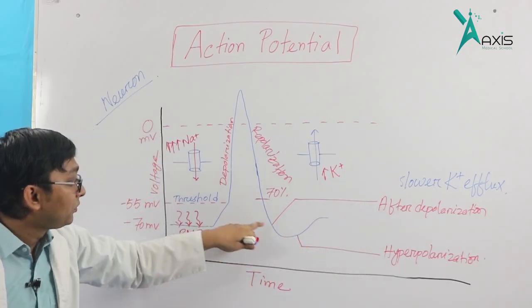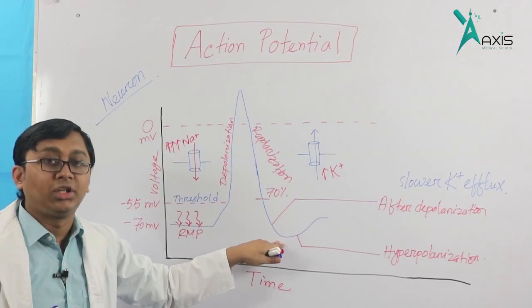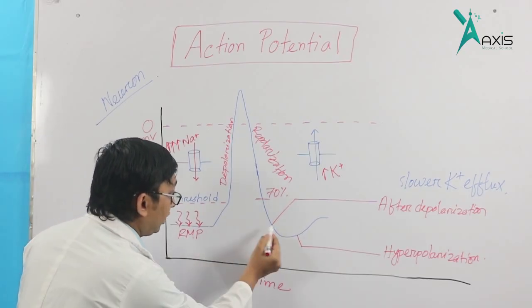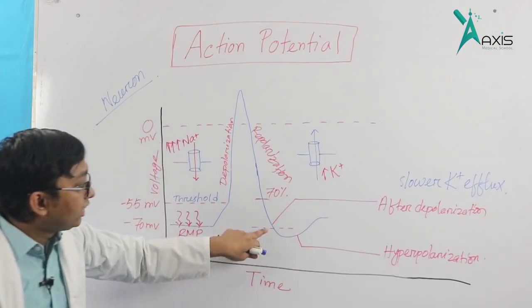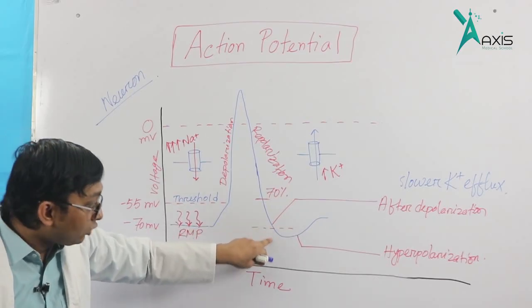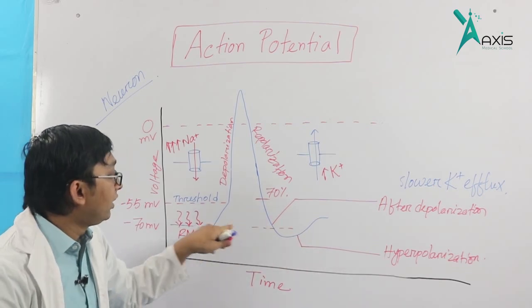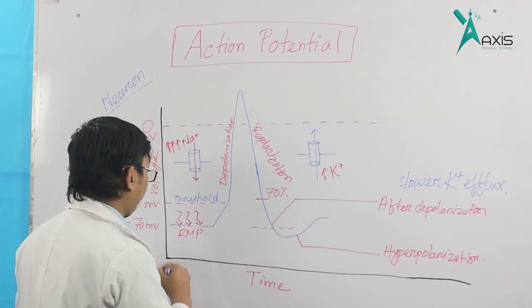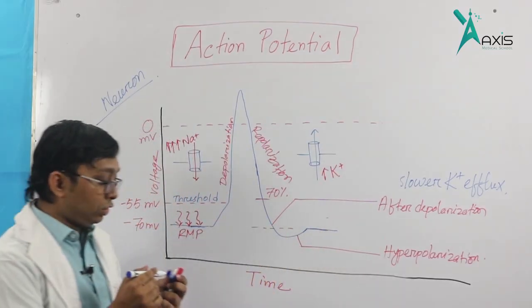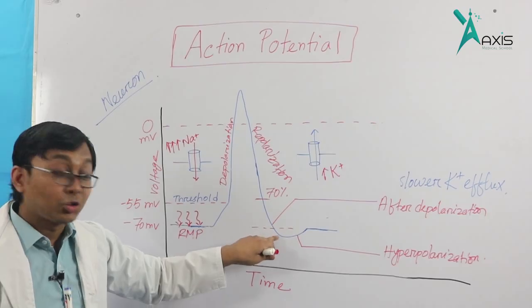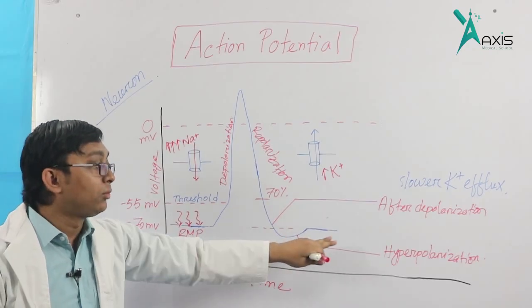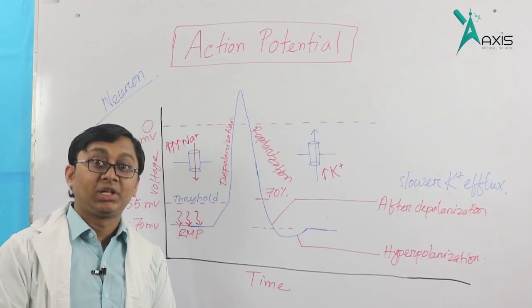Now another important event occurs. Look, the resting membrane potential was at this level. But during this repolarization, it doesn't stop at the resting level. It overshoots and goes below, then comes back to the resting membrane potential level. This event that occurs, this overshoot below the resting level - why does it happen?